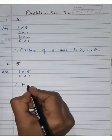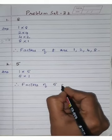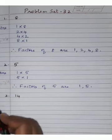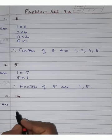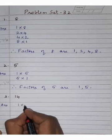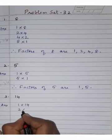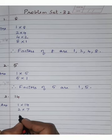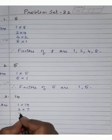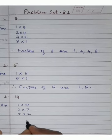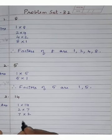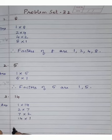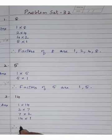Our third question is 14. 14 comes in: 1 × 14 = 14, 2 × 7 = 14. Three, four, five, and six tables are not coming. 7 × 2 = 14. Eight, nine, ten, eleven, twelve, and thirteen tables are not coming. Then 14 × 1 = 14.